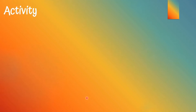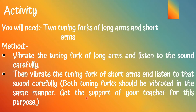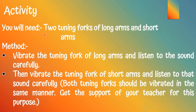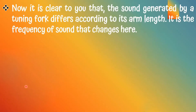There are many activities in this lesson. For this activity, the equipment needed are two tuning forks — one with long arms and one with short arms. The method: vibrate the tuning fork of long arms and listen to the sound carefully, then vibrate the tuning fork of short arms and listen carefully. Both tuning forks should be vibrated in the same manner. Get the support of your teacher for this purpose.